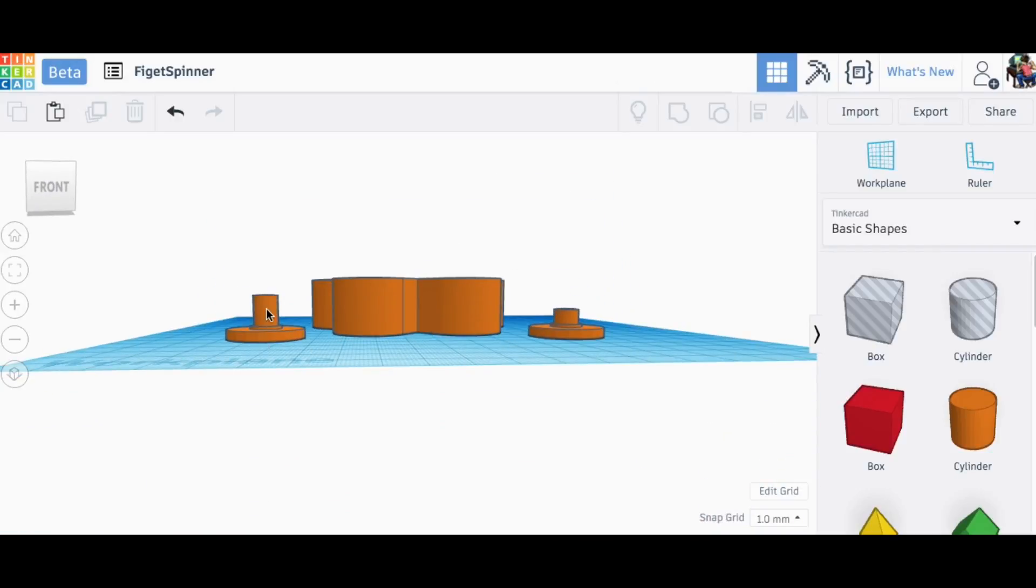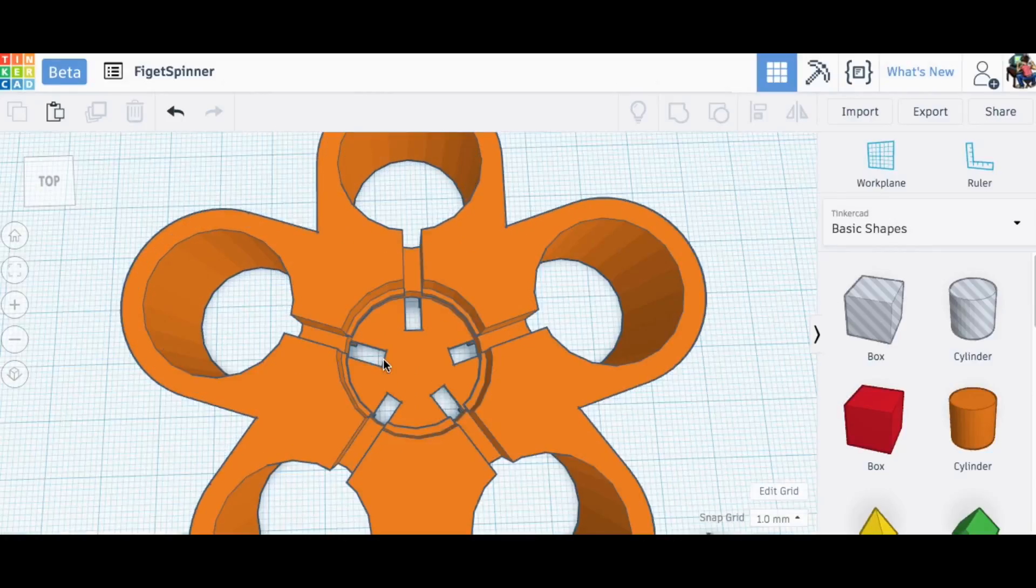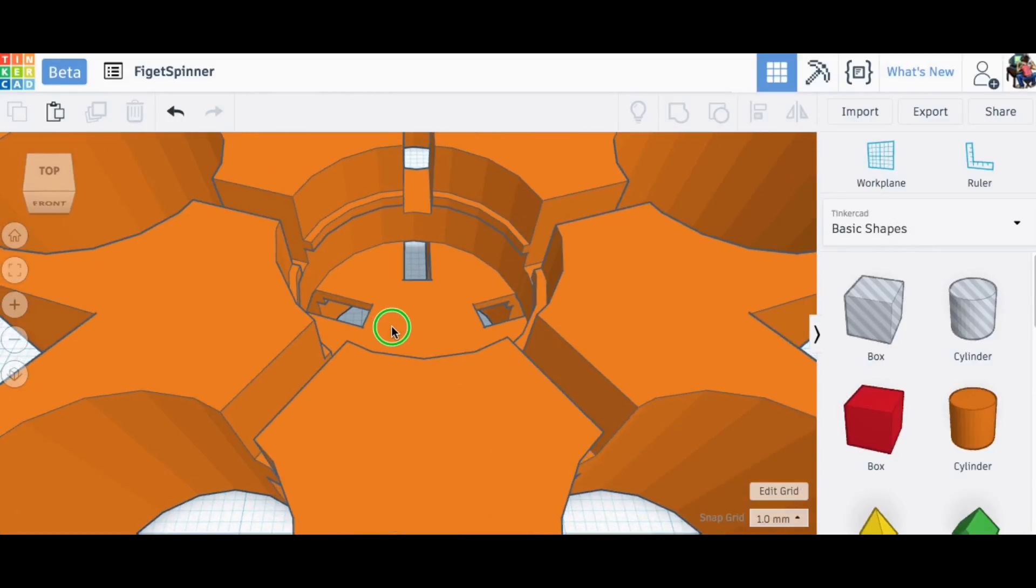So it started out with these two end caps and one's taller than the other because the taller one's actually going to push the switch that lights the LED. And then the center section is a high five spinner based on Joel Telling, 3D Printing Nerd's design.